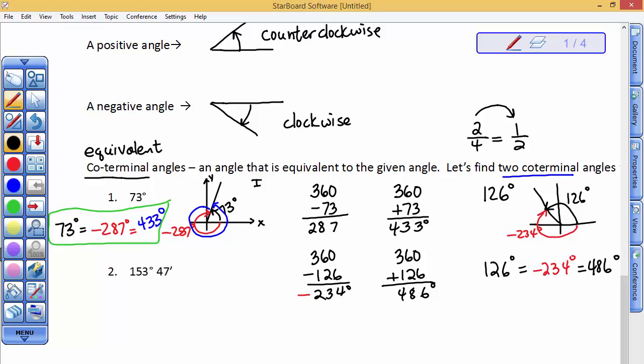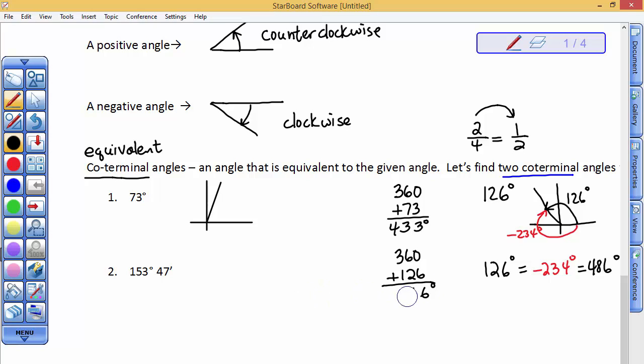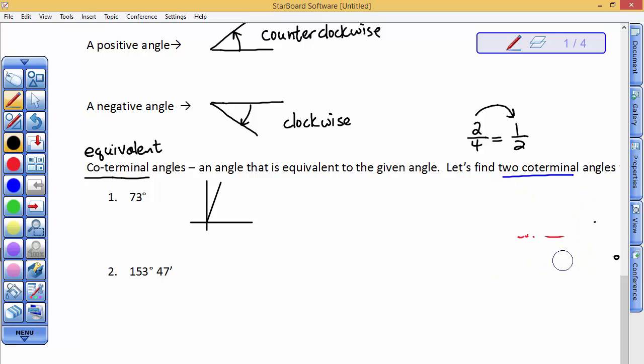Alright. Maybe hit pause so you can record these numbers because I'm going to erase them right now. So, I want to do the next problem and I just need a little bit more space. So, 153 degrees, 47 minutes. So, that's close to 180 degrees, which is in the second quadrant. So, that's somewhere over here. That's where 153 degrees, 47 minutes is.